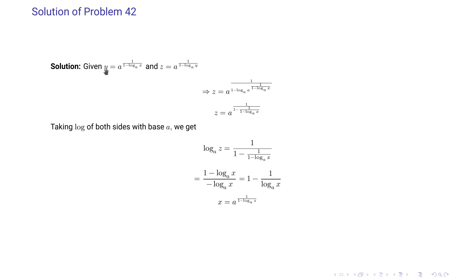We are given the values of y and z, so we substitute the value of y into z's expression. We get z equal to a to the power 1 divided by (1 minus log of (a to the power 1/(1 minus log x base a)) base a). Since log of a base a equals 1, we are left with z equal to a to the power 1/(1 minus 1/(1 minus log x base a)).